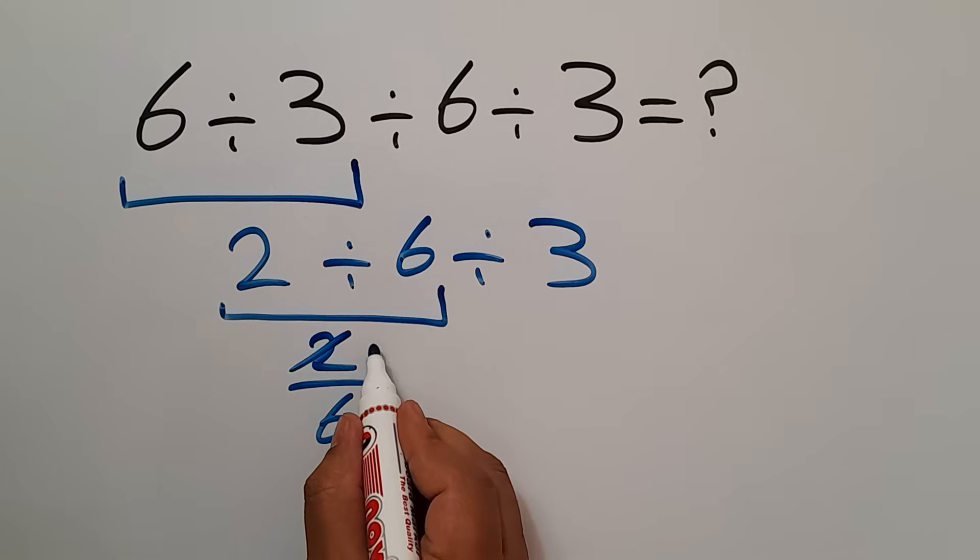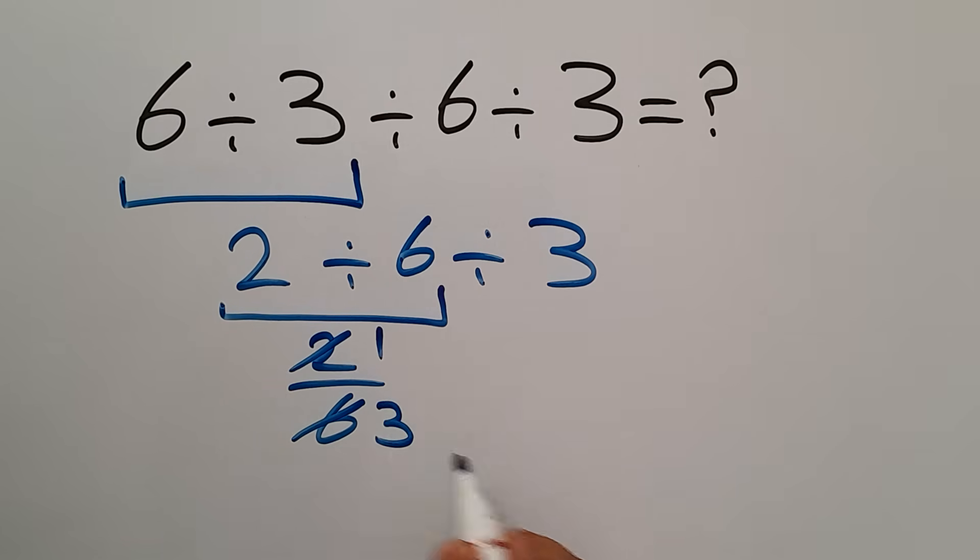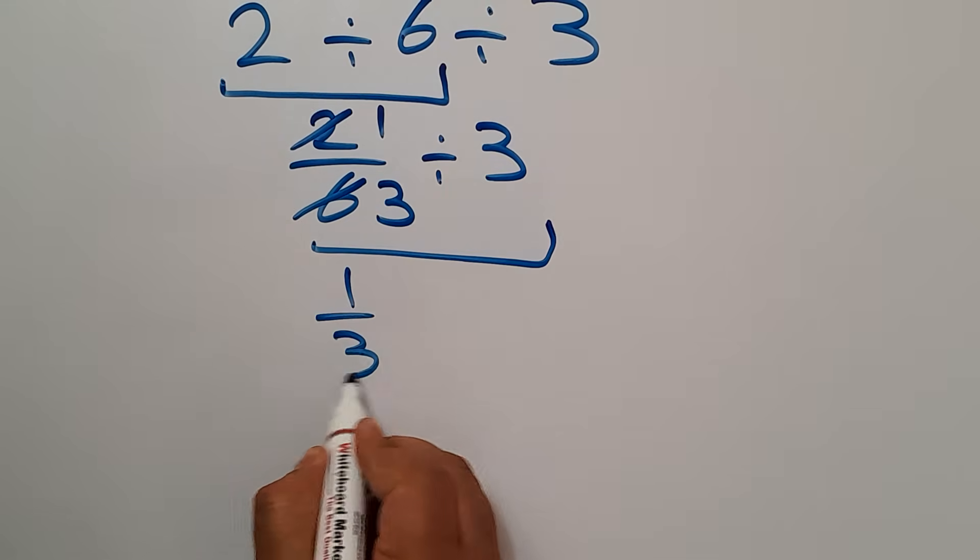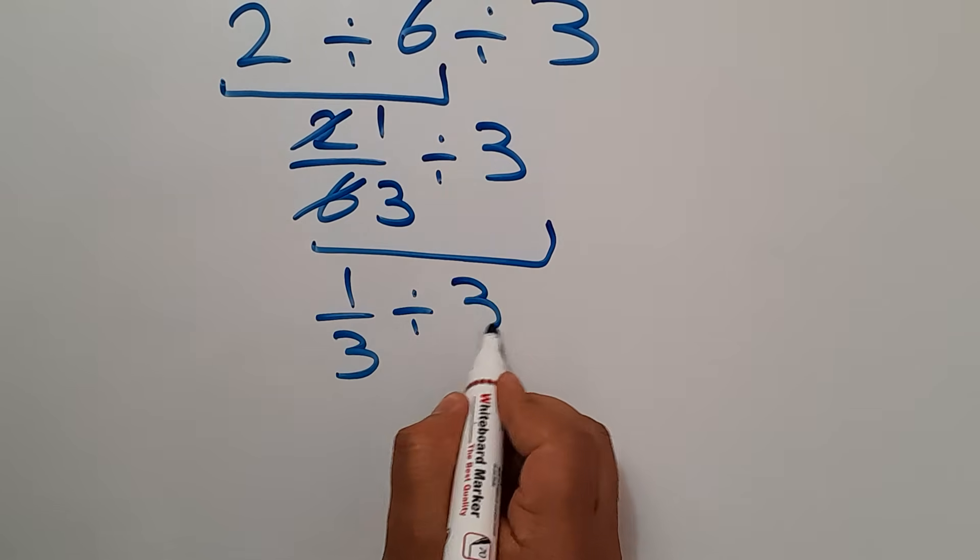2 divided by 2 gives us 1. And 6 divided by 2 gives us 3. And we have here divided by 3. So we have 1 over 3 divided by 3.